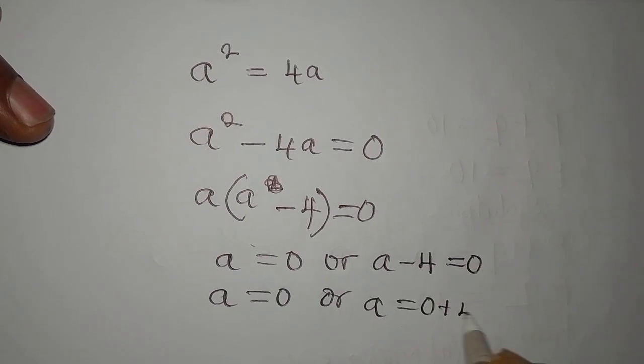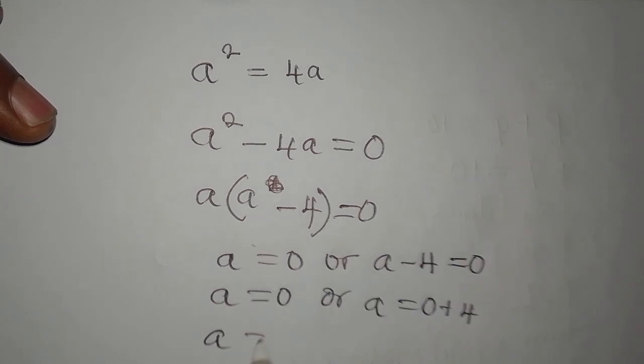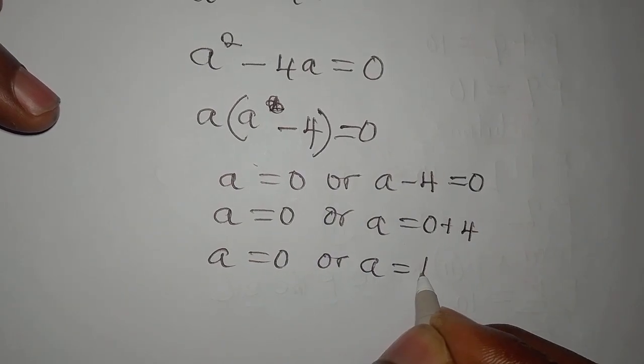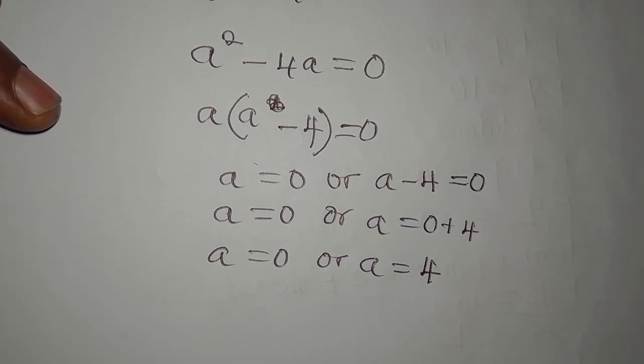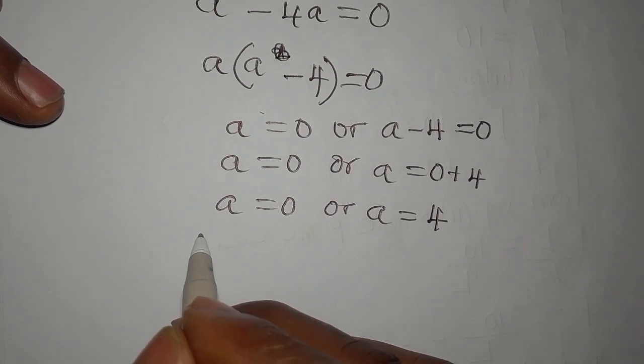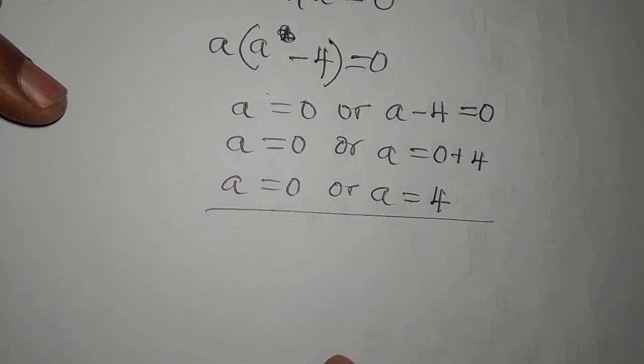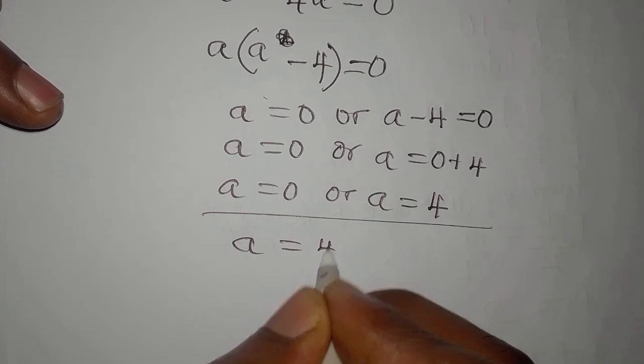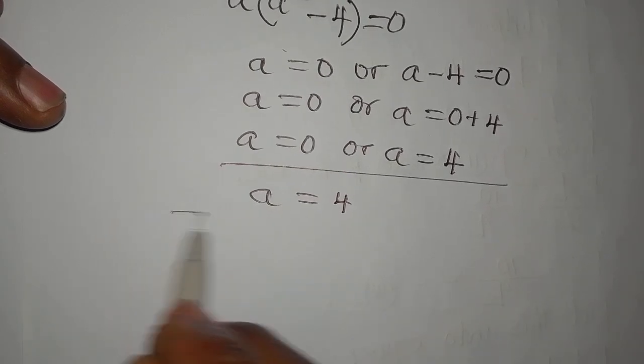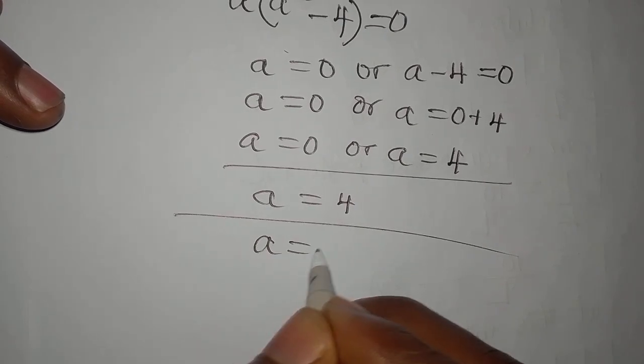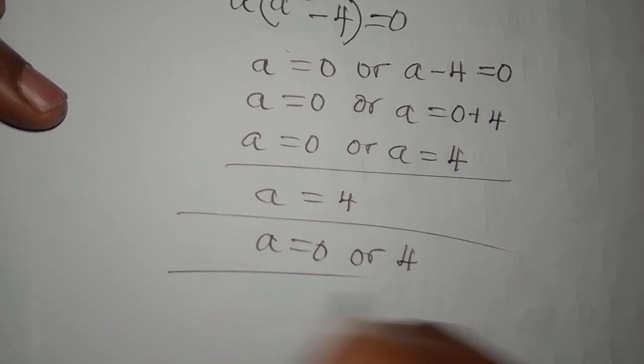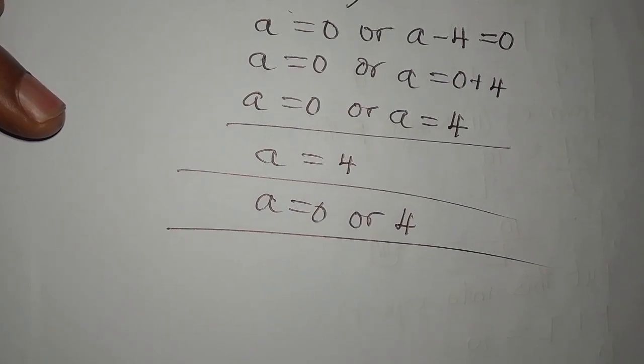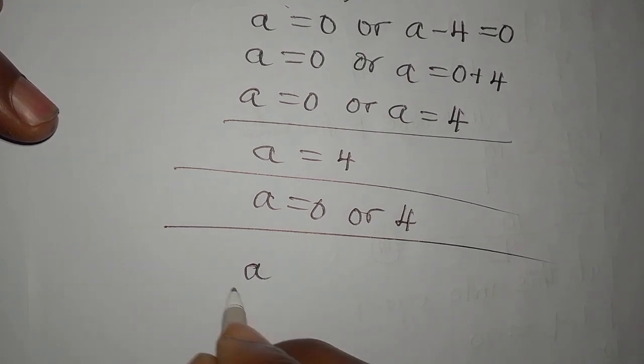So a equals 0 or a equals 4. Right, and remember what the first solution gave us? The first method gave us a to be 4. So which one of the methods is more accurate? Remember the equation is a over square root of a equals 2.